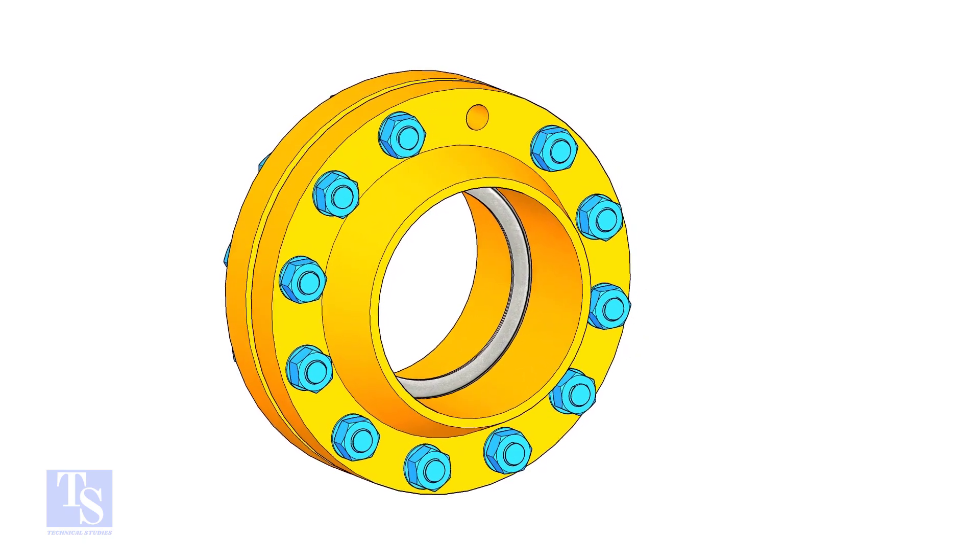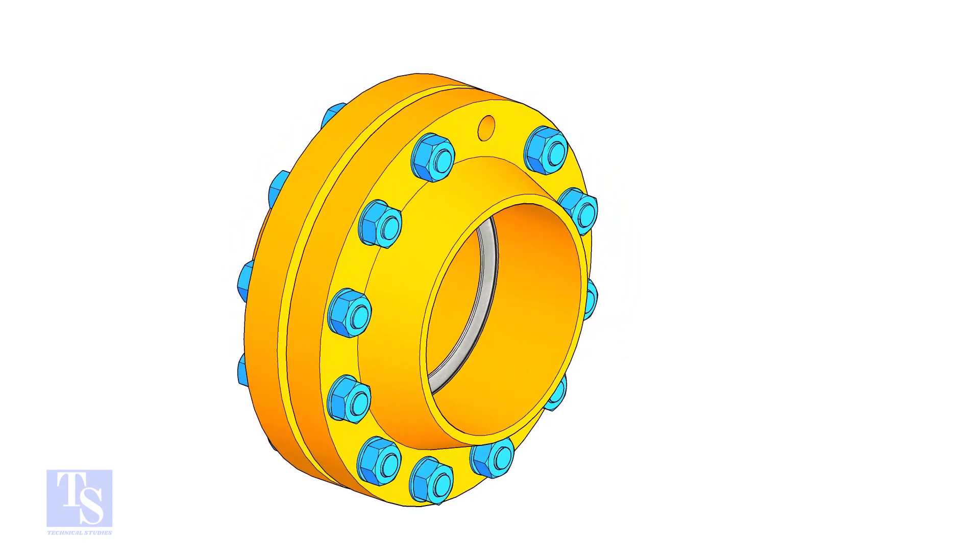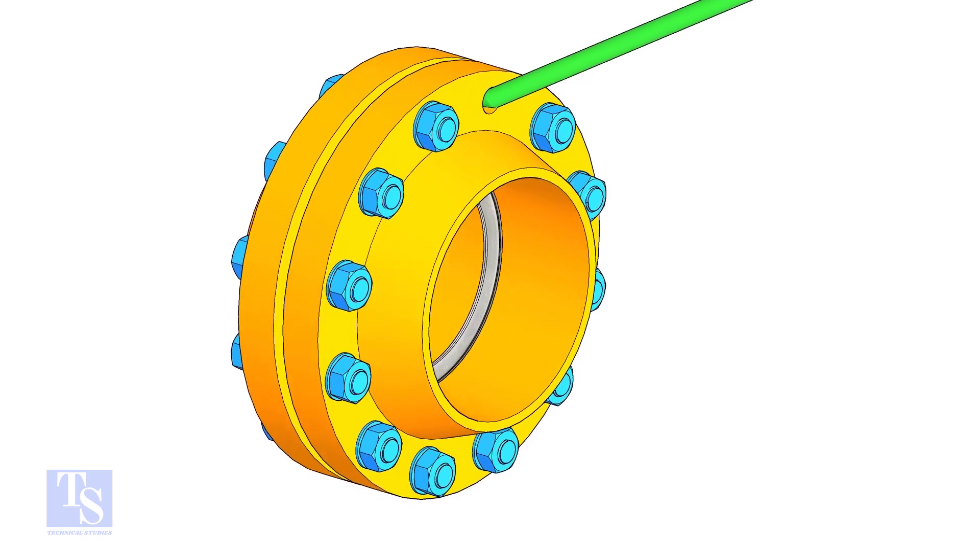Use a lever bar to align the holes and the outer face of the flanges. Now, lift the gasket to its position. You can use a piece of welding rod.